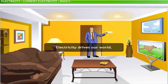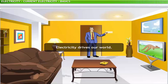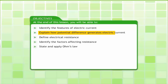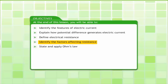Electricity is also known as electric current. In this lesson, you will learn about electric current, its causes and applications. At the end of this lesson, you will be able to identify the features of electric current, explain how potential difference generates electric current, define electrical resistance, identify the factors affecting resistance, and state and apply Ohm's law.